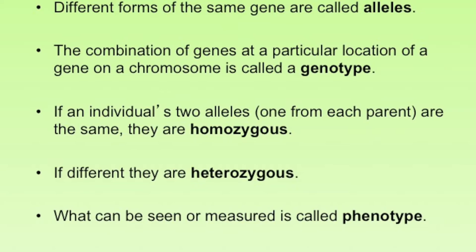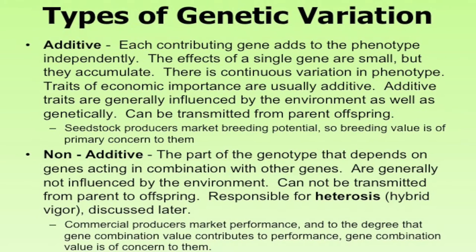What can be seen or measured in an animal is called the phenotype. It could be as simple as a red color, roan, or solid white due to a diluter gene, but it also includes traits like marbling, weaning weights, and yearling weights — those are ultimately the phenotype of that animal.